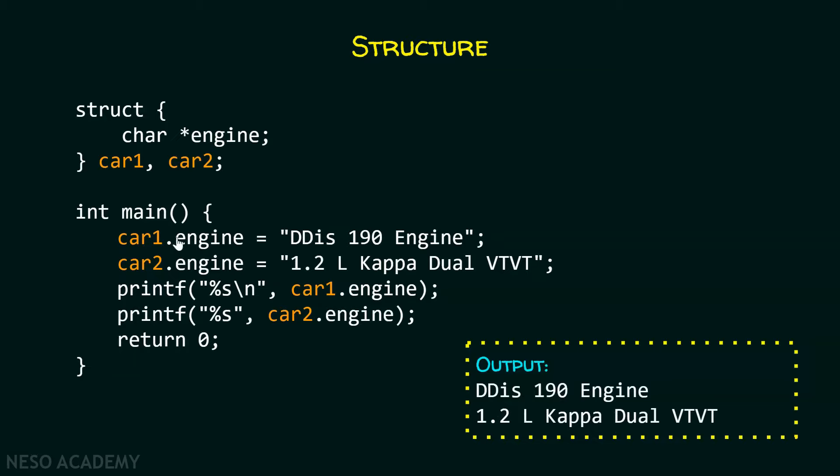So, with the help of dot operator, we can access the members of the structure. And because of structure, there is no need to create separate variables for these specifications. There is no need to create car1 engine variable separately, car2 engine variable separately, car3 engine variable separately and so on. We just have to declare these variables and then we can access the members of the structure using these variables.